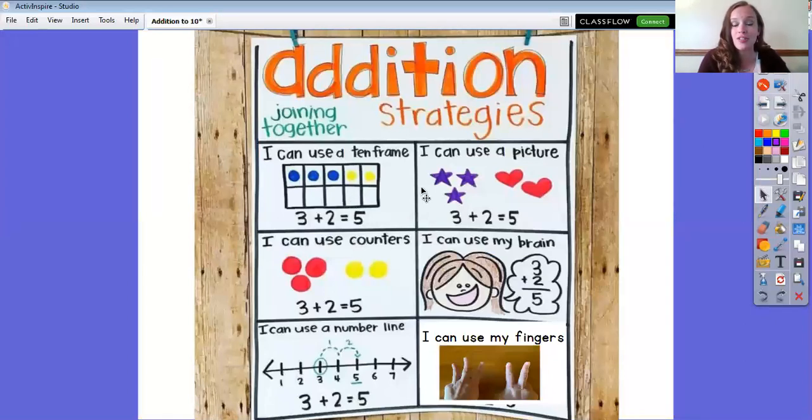We've also learned that you can draw a picture or you can use a picture to help you solve an addition problem. So it looks like to solve that same problem 3 plus 2 equals, they used 3 purple stars and they also drew 2 red hearts to solve that problem. 3 plus 2 equals 5.